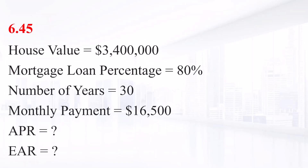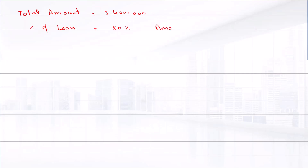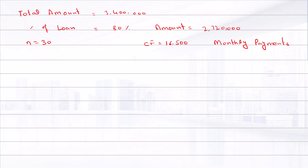Since we are making a down payment on the warehouse, the amount borrowed is equal to the total purchase price of 3.4 million multiplied by the loan percentage of 80 percent, which gives us 2.72 million. The number of years is 30, cash flows are 16,500 per month, and since these are monthly payments, N will be 30 times 12, which equals 360.